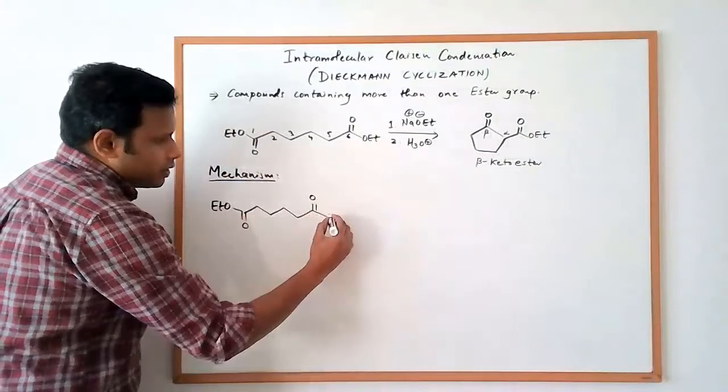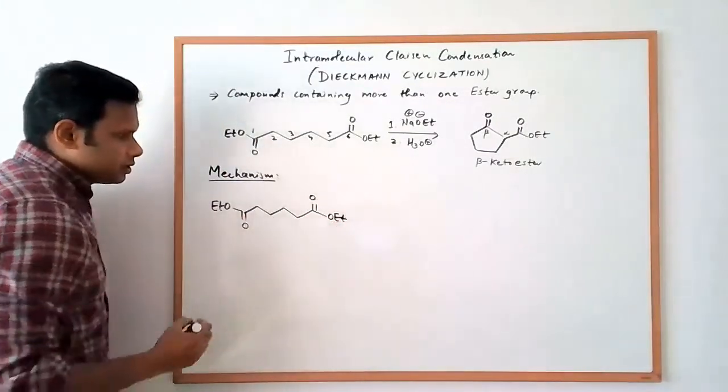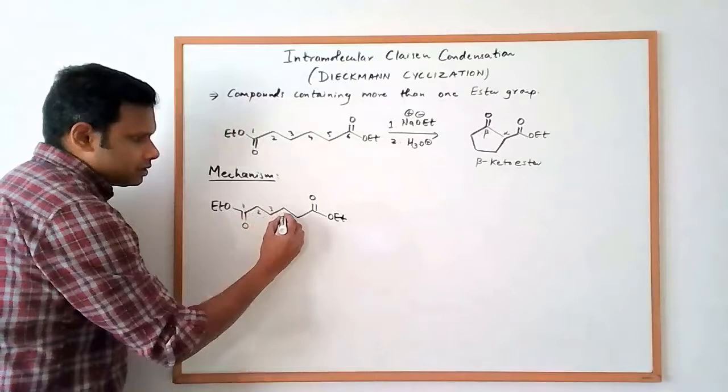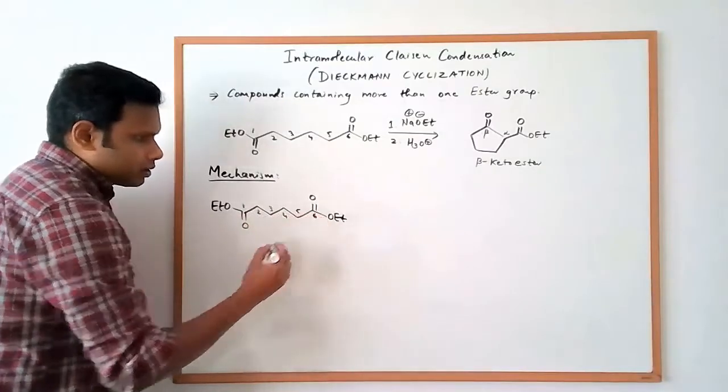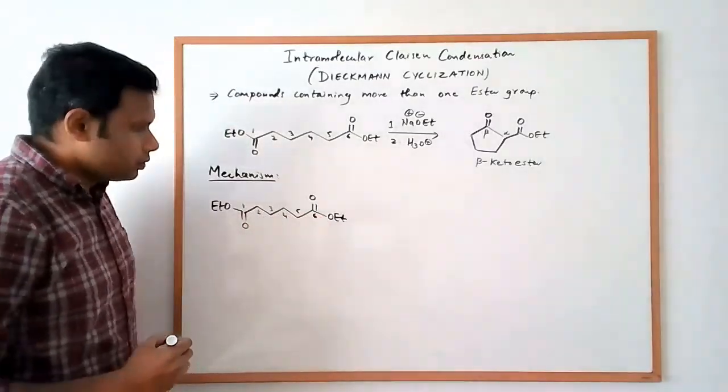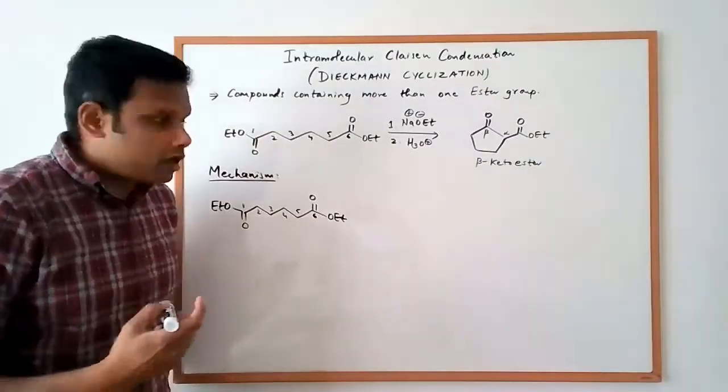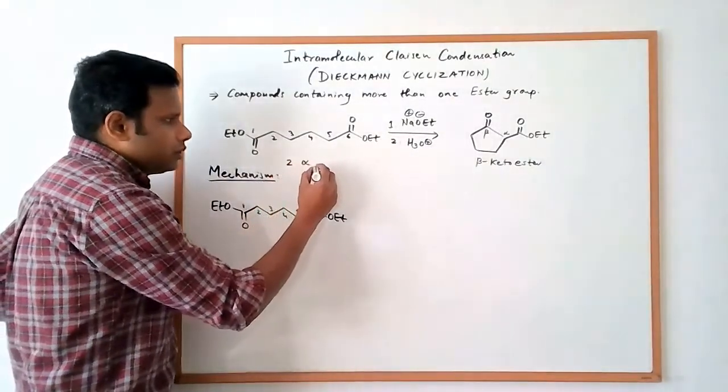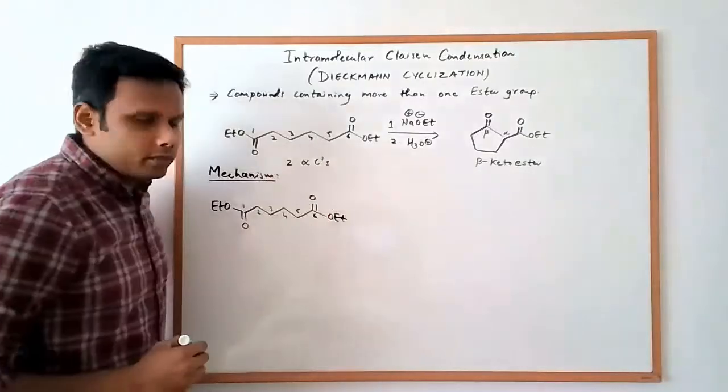Now, as far as the starting ester is concerned, let me draw it again for the purposes of our mechanism here. So as far as the starting ester is concerned, this is a symmetrical molecule. There is symmetry in this molecule. And there are two alpha carbons.